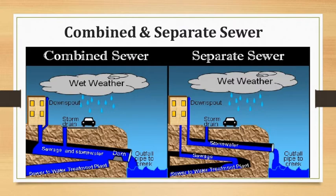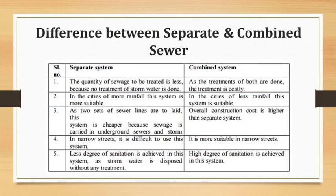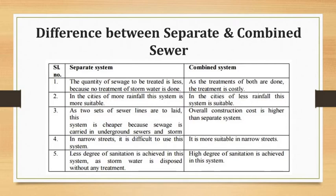The first difference between separate and combined systems is the quantity of sewage to be treated. In the separate system, the quantity to be treated is less because stormwater does not require treatment. In the combined system, both sewage and stormwater are treated together, making treatment more costly.